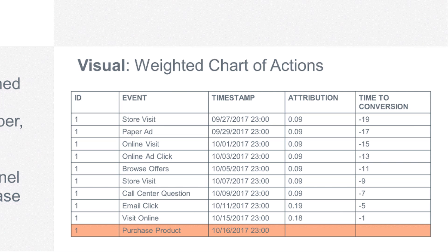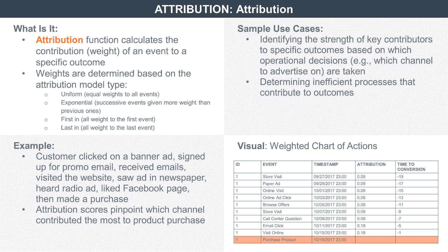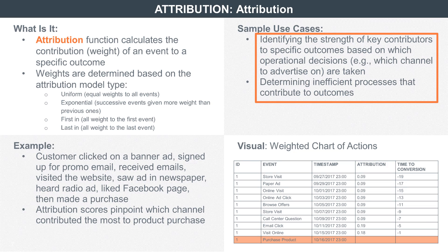Or was it all of the activities? Attribution is a function that parses these activities and assigns a value to each activity category, based on which the company can make future investment decisions. For example, if the newspaper ad has the highest contributing factor, they would decide to put more money into print media.